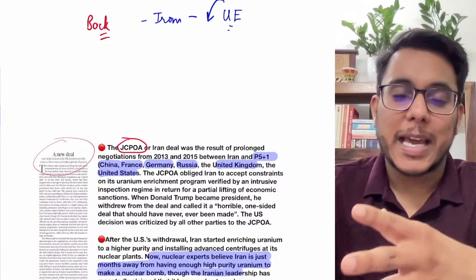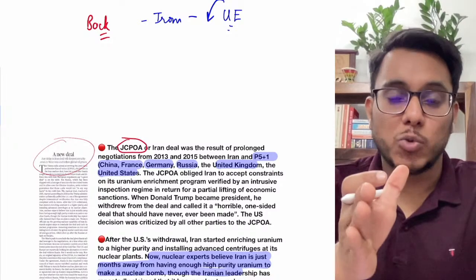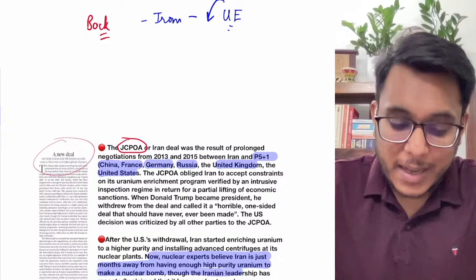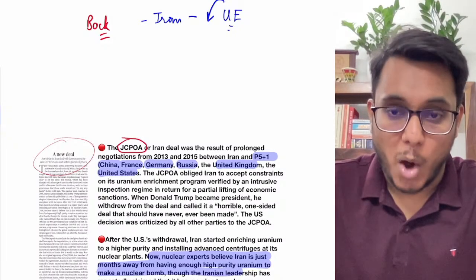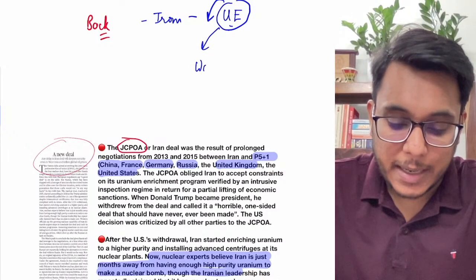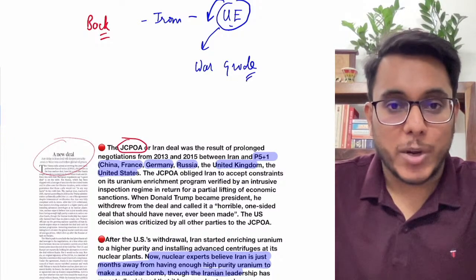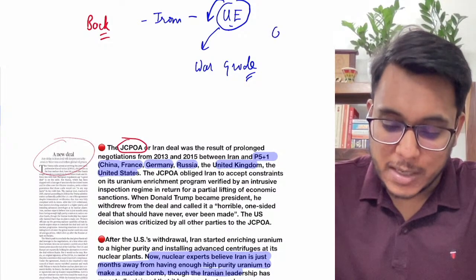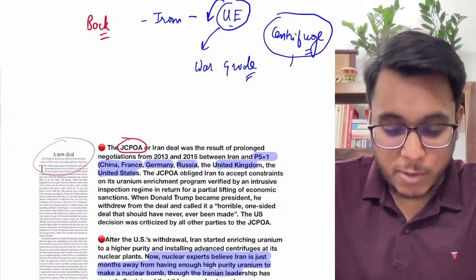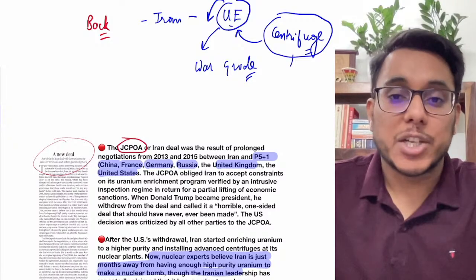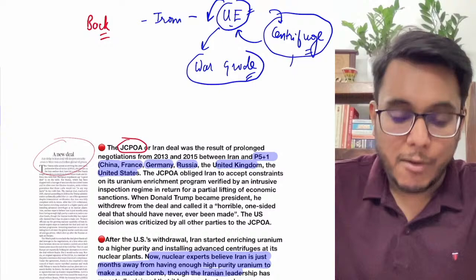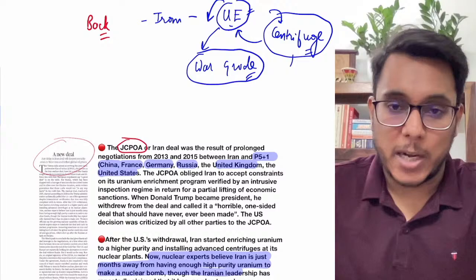If you want to use uranium for making a bomb, you have to enrich it from its natural state to war-grade using a process involving centrifuges. Iran was using centrifuges to enrich uranium. The world said Iran was enriching uranium to create war-grade material; Iran said it was only for scientific purposes. This became a bone of contention. From 2012-13 onwards, world countries came together to control Iran, and in 2015 an agreement — the JCPOA — was signed.